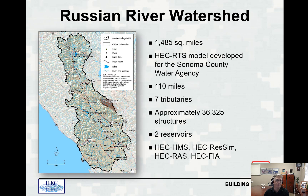The Russian River watershed was also a SWIMS-to-WAT conversion, performed to support a FIRO — Forecast-Informed Reservoir Operation — type study. The Russian River watershed in California is about 1,500 square miles, conducted alongside the Sonoma County Water Agency. It included 110 miles of hydraulic models, seven tributaries, about 36,000 structures, two reservoirs, and HMS, ResSim, RAS, and FIA models.